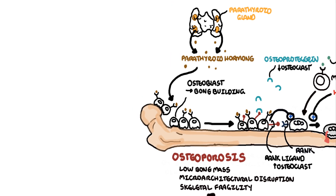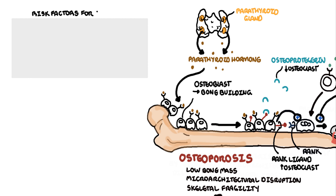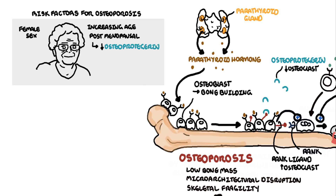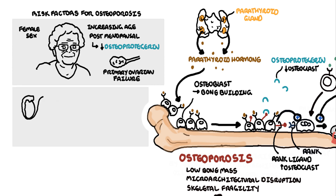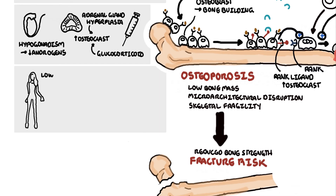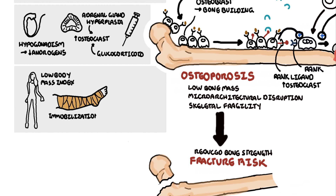Many things can affect bone physiology and increase the risk of osteoporosis. For example, increasing age and female sex, mainly because of postmenopause, because oestrogen normally increases OPG expression — so low oestrogen, as in postmenopause, causes low OPG. Hypogonadism or premature ovarian failure also contributes. Adrenal gland hyperplasia or long-term glucocorticoid use increases osteoclastic activity and so increases risk of osteoporosis. A low body mass index, immobilization, and space travel — basically being weightless — reduces osteoblastic activity.